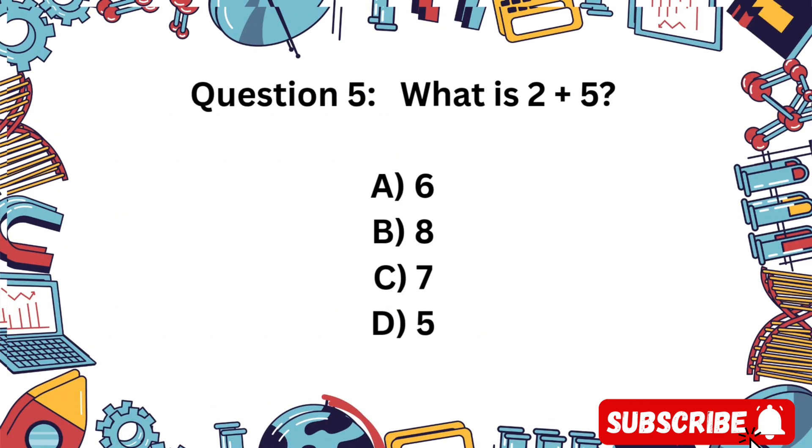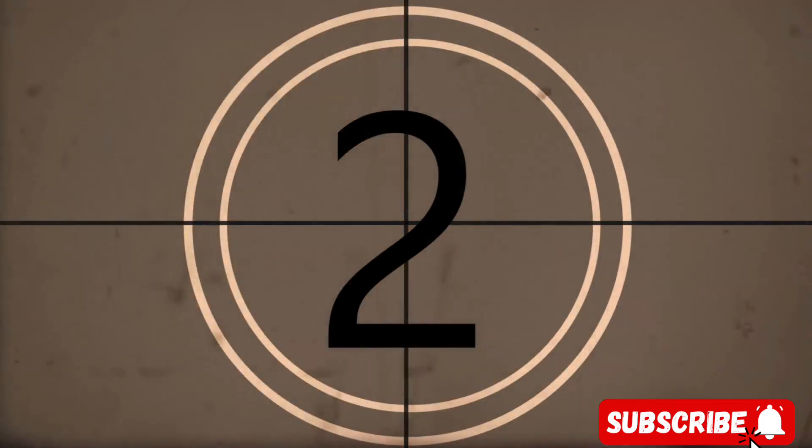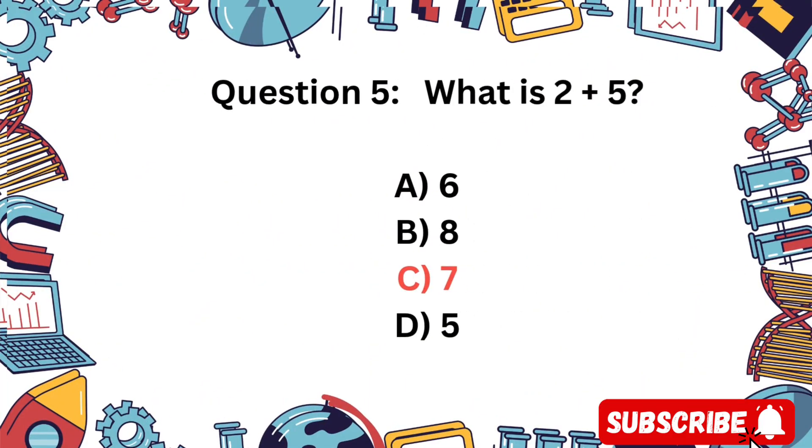Question 5. What is 2 plus 5? A) 6, B) 8, C) 7, or D) 5? Correct! 2 plus 5 equals 7.